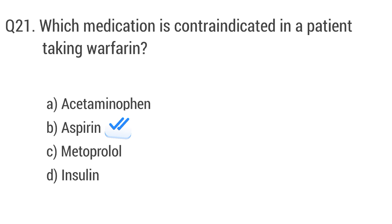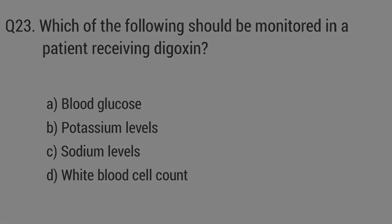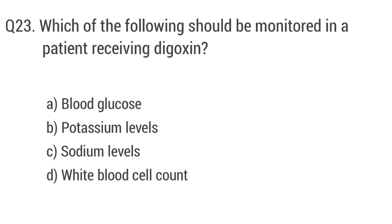Question 22: What is the antidote for opioid overdose? The right answer is option B: Naloxone. Question 23: Which of the following should be monitored in a patient receiving digoxin? The right answer is option B: Potassium level.